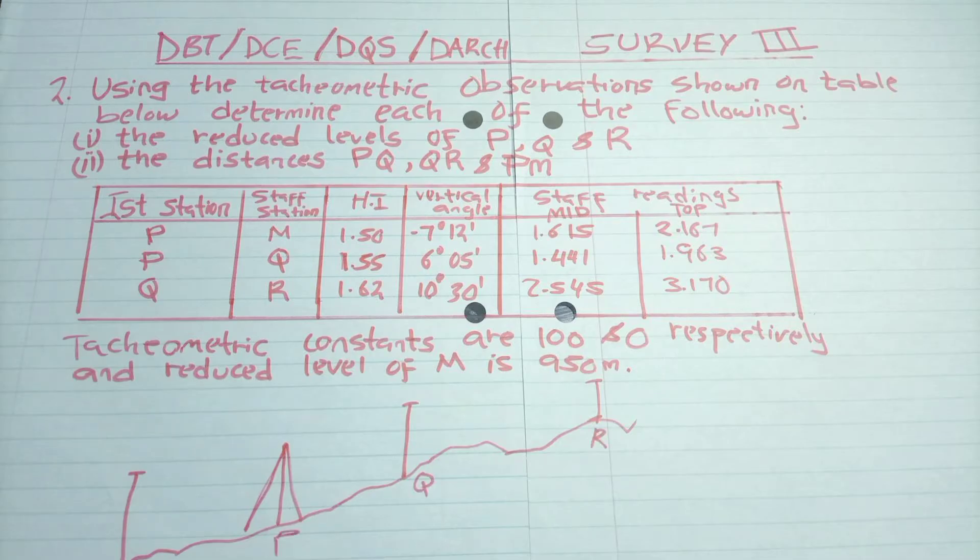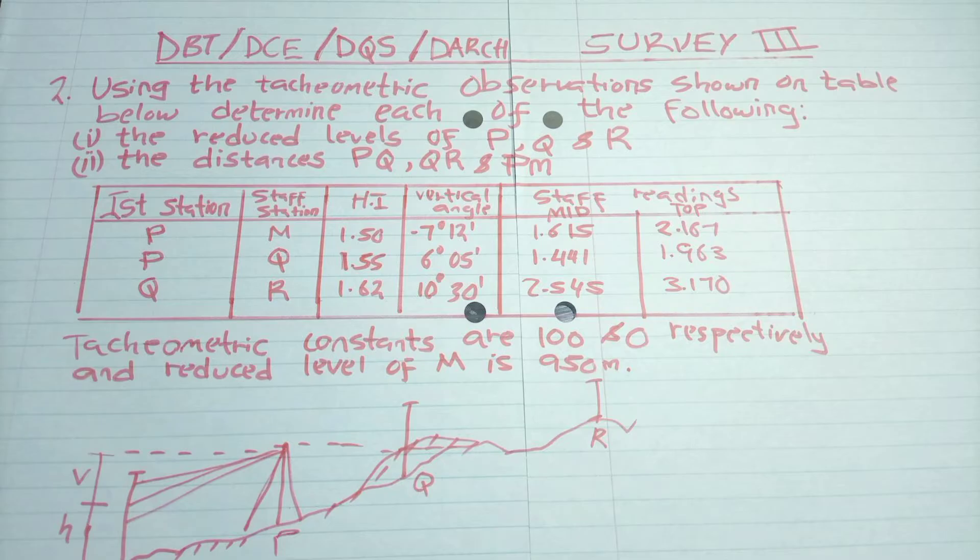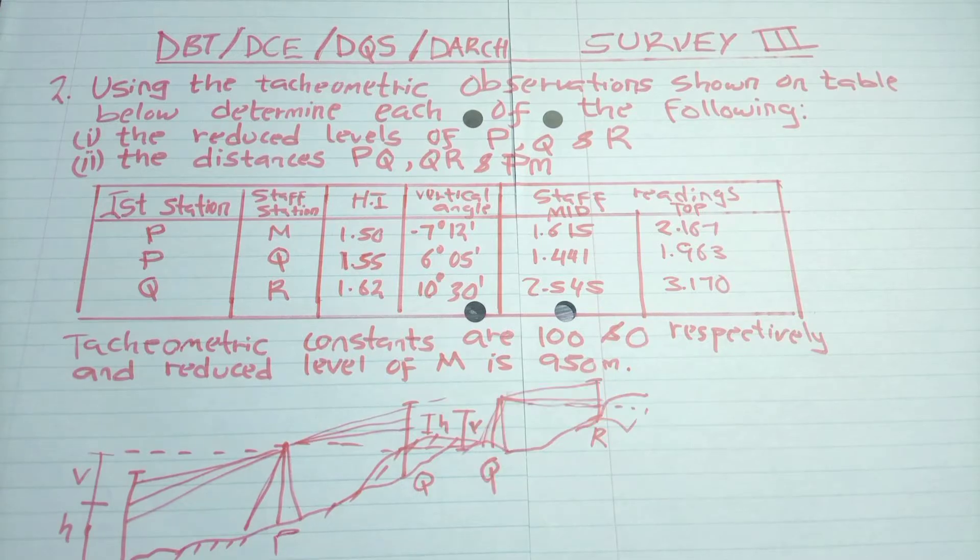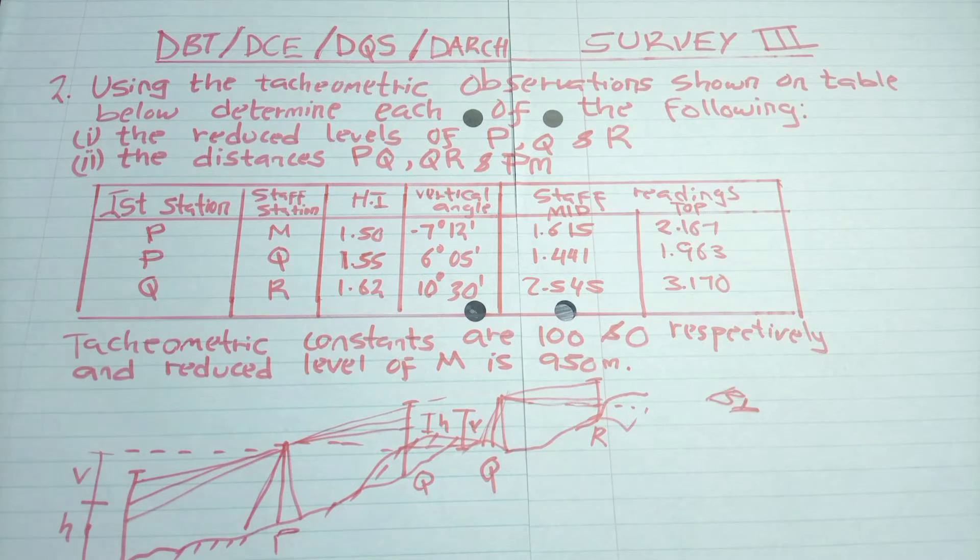Now we can draw our diagram, illustrating where P is, M is, Q is. So from P, we have two staff stations, that is M and Q. And from Q also we have a staff station at R. So we collect the distances P-Q.